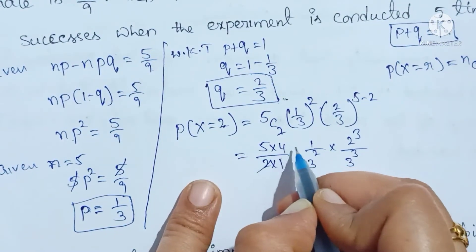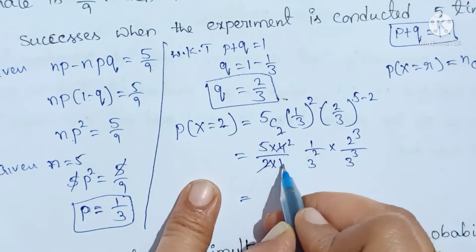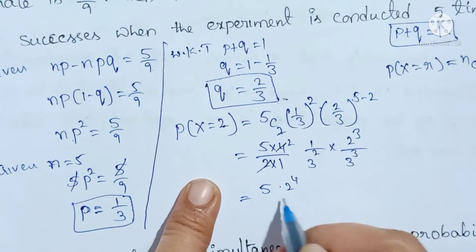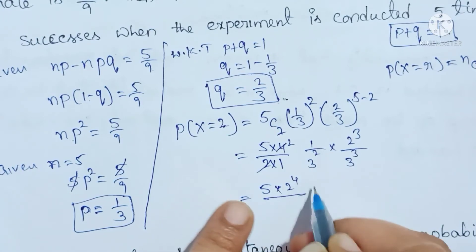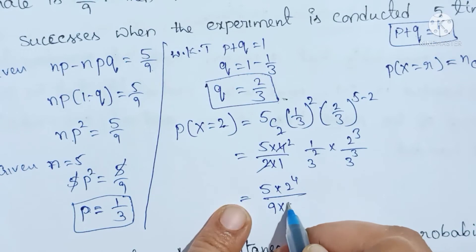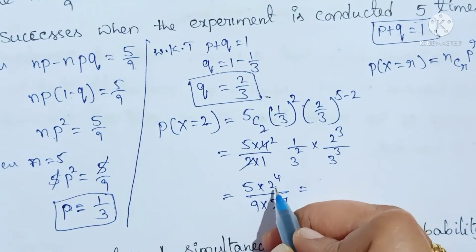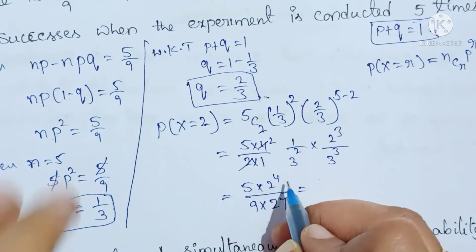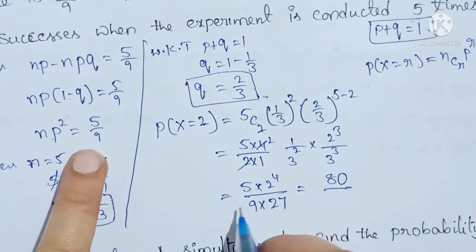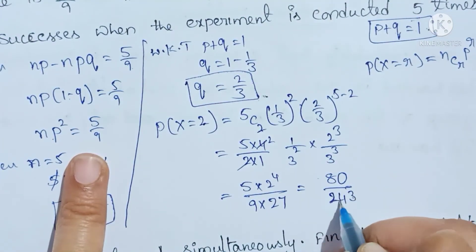Using cancellation, P(X=2) = 5C2 × (1/3)^2 × (2/3)^(5−2) = 5C2 × (1/3)^2 × (2/3)^3. Final numerator: 5 × 2^4 = 5 × 16 = 80, divided by 9 × 27 = 243. So P(X=2) = 80/243.